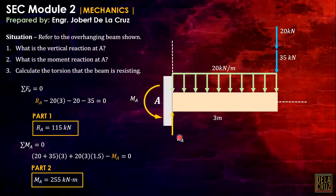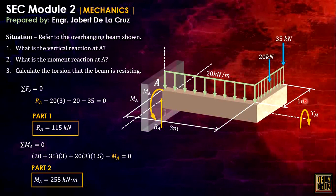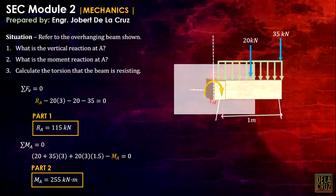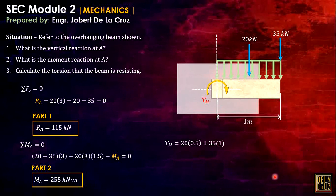Now for the torsion that the beam is resisting: looking at this in this plane, the torsional moment is about the longitudinal axis. The torsional moment is 20 times 0.5 (half of 1 meter, the resultant of the UDL) plus 35 times 1 meter (moment arm), giving a torsional moment of 45 kilonewton-meters.